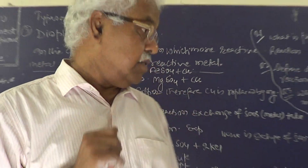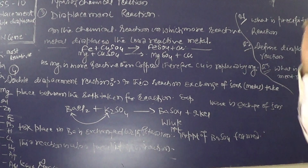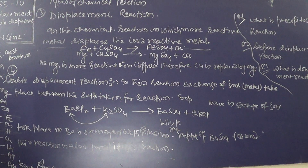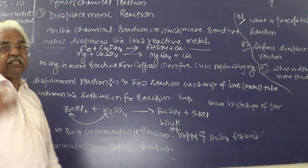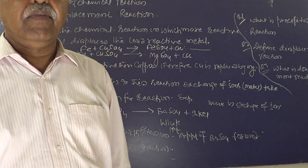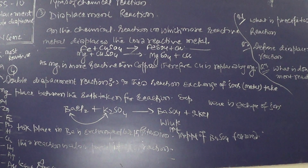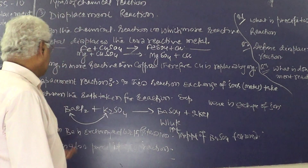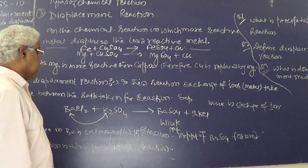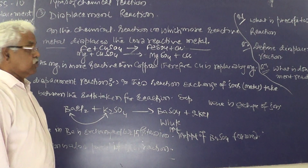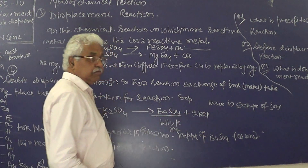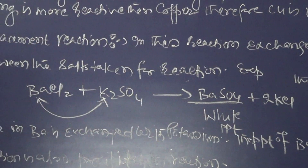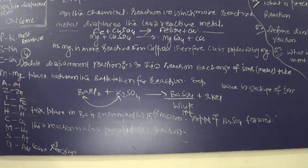Now children, let me discuss further. The second part is the double displacement reaction. These are chemical reactions in which there is an exchange of ions. For example, barium chloride and potassium sulfate exchange ions between the salts, producing barium sulfate and potassium chloride. A white precipitate of barium sulfate will be formed.